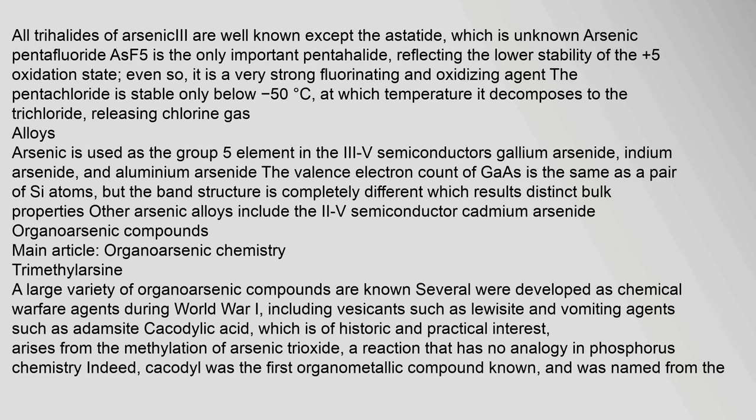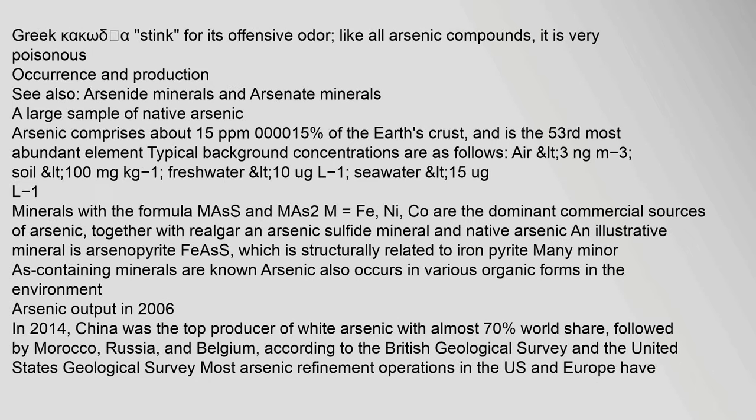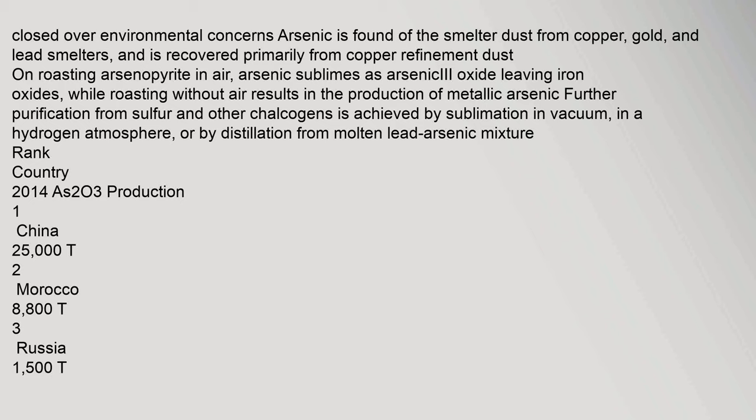Arsenic comprises about 1.5 ppm of the Earth's crust. Due to environmental concerns, arsenic is found in the smelter dust from copper, gold, and lead smelters, and is recovered primarily from copper refinement dust. On roasting arsenopyrite in air, arsenic sublimes as arsenic trioxide, leaving iron oxides; roasting without air results in the production of metallic arsenic. Further purification from sulfur and other chalcogens is achieved by sublimation in vacuum, in a hydrogen atmosphere, or by distillation from molten lead-arsenic mixtures.